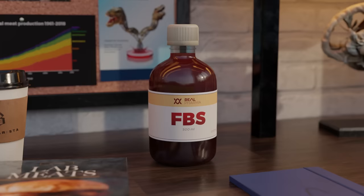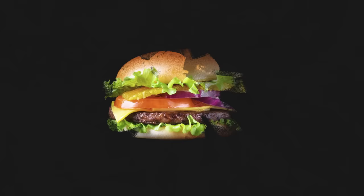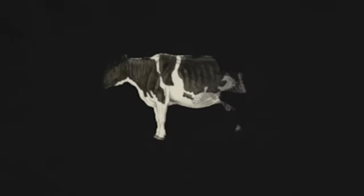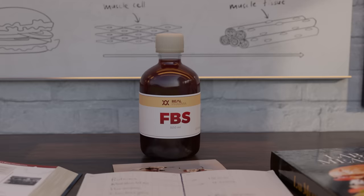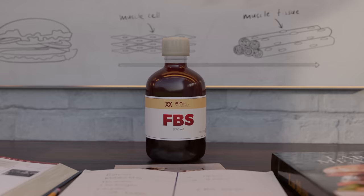To make a single lab-grown beef burger, an estimated 50 liters of bovine serum is needed. And depending on age, a single cow fetus can yield between 150 and 550 milliliters of serum. That means to create a single burger, you need the blood of between 90 and 333 cow fetuses. Until a synthetic, or plant-based alternative to FBS is found, slaughter-free, widely available lab-grown meat is completely unfeasible.